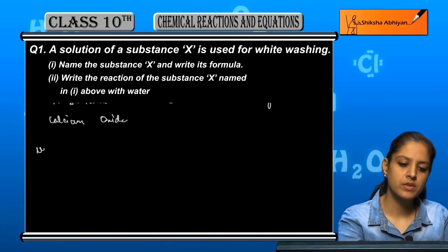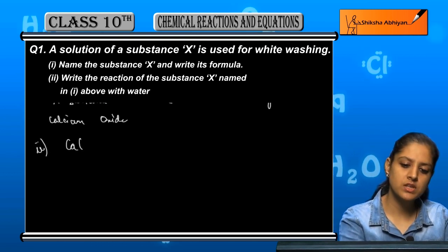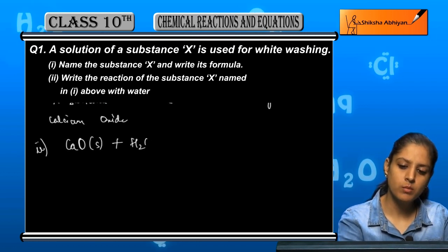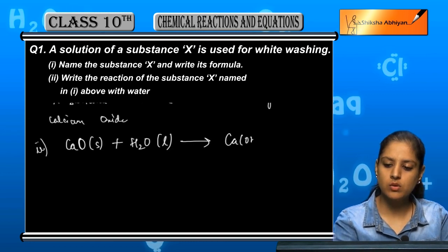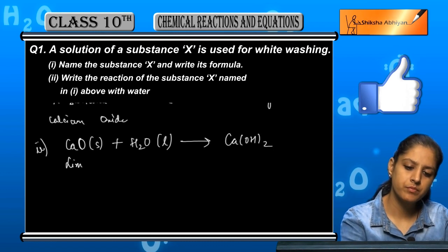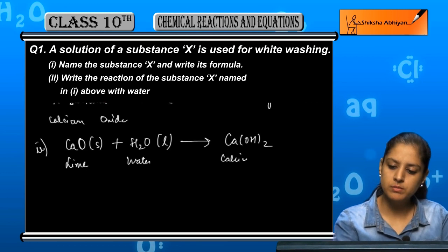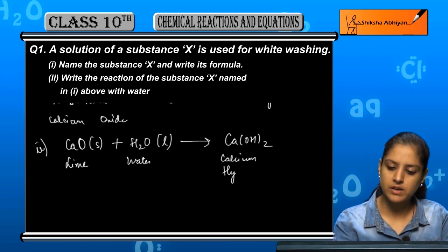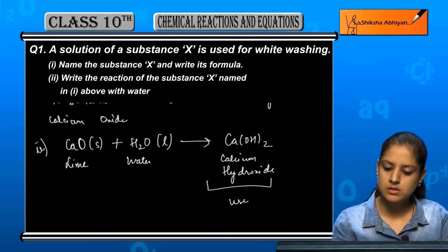Now let's see calcium oxide when we react it with water. CaO, which is a solid, if we react with water, which is a liquid, it forms Ca(OH)2. That means lime plus water gives us calcium hydroxide. This is used for white washing.